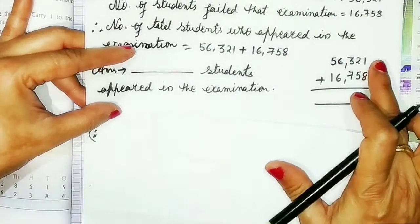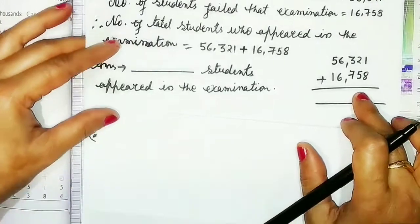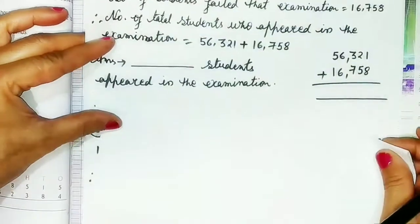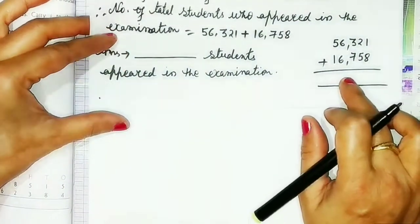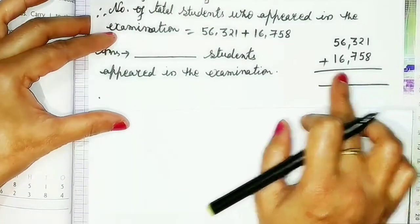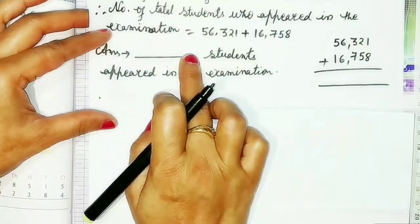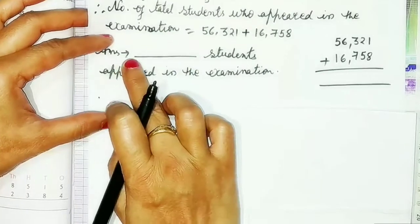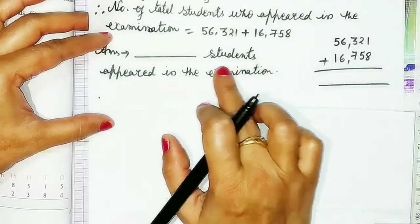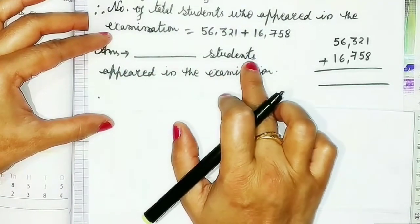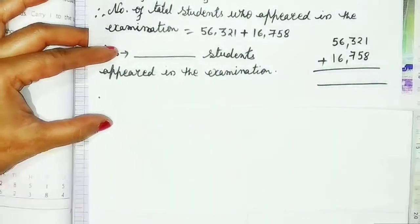Students, you have to do the calculation and after the calculation, write the same number in the blank space. Then you will write the answer: the number of students who appeared in the examination.